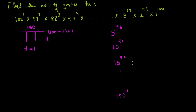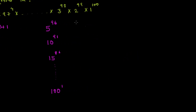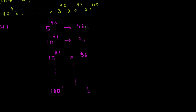Now we count the number of fives. 5 to the power 96 gives 96 fives, contributing 96 zeros. 10 to the power 91 gives 91 fives (since 10 = 2 × 5), contributing 91 zeros. Similarly, 15 to the power 86 gives 86 fives. Right now I'm only counting one five per multiple of five — the extra fives from multiples of 25 will be handled separately.